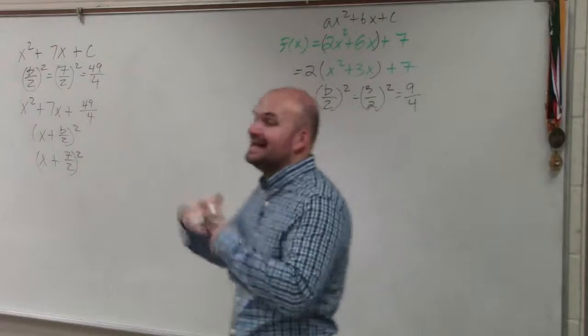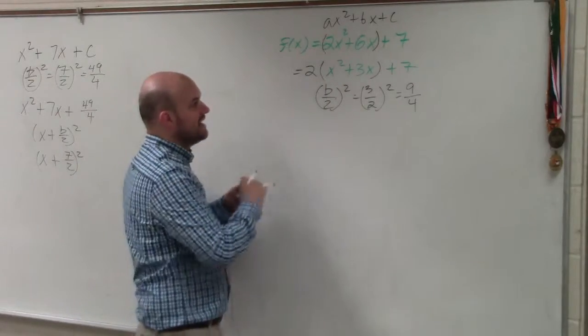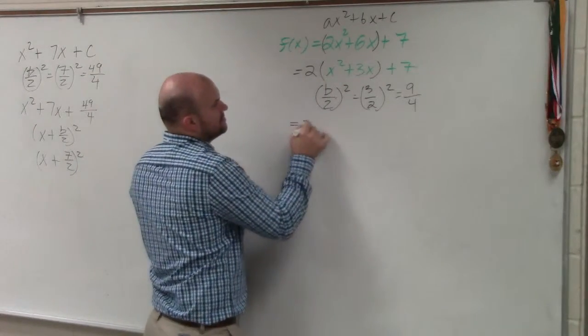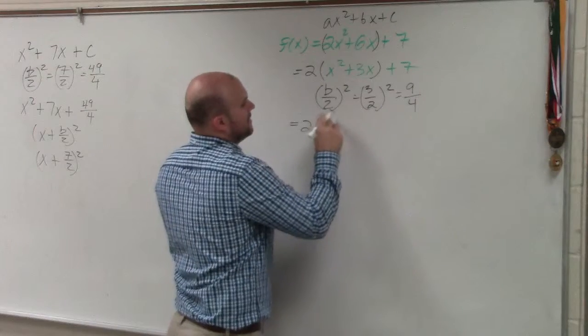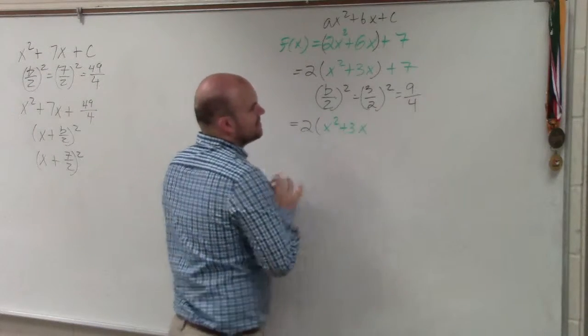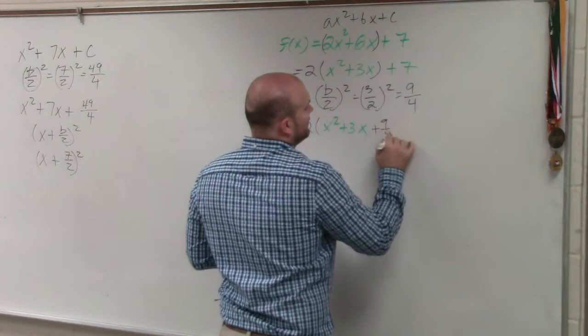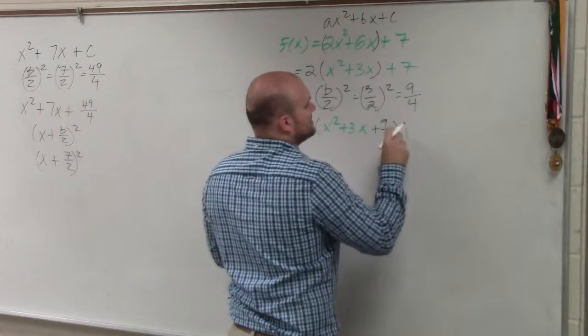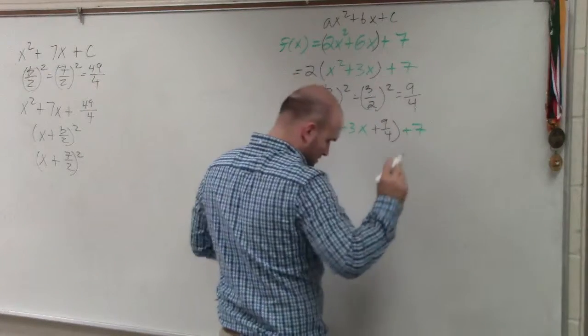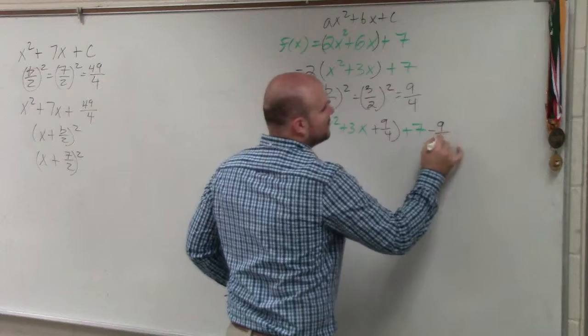Then, as we talked about, you add that inside the parentheses and you subtract it outside the parentheses. So I have 2 times x squared plus 3x plus 9 over 4 plus 7 minus 9 over 4.